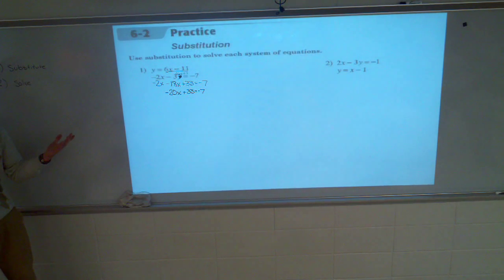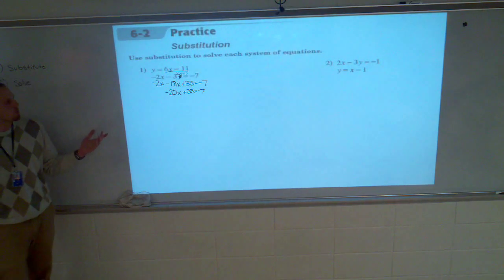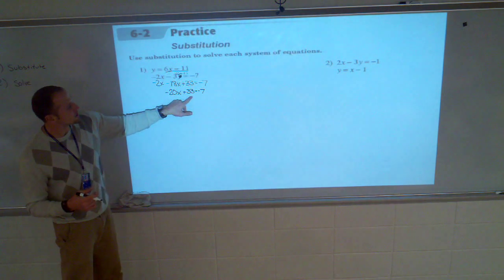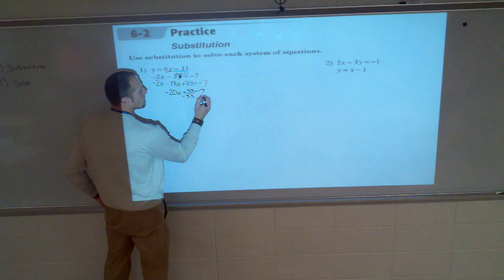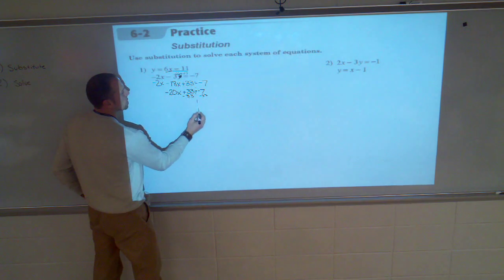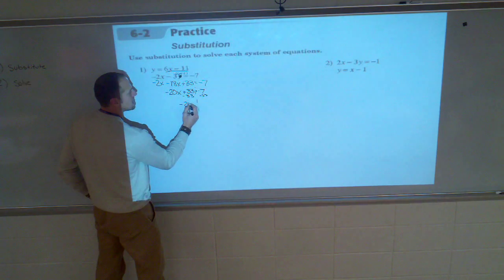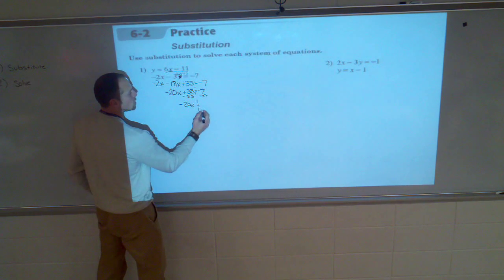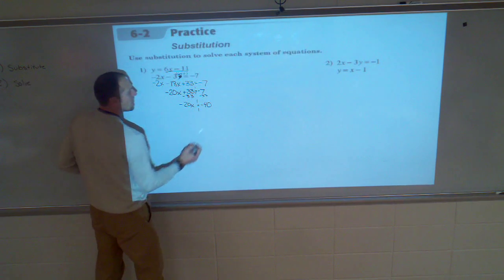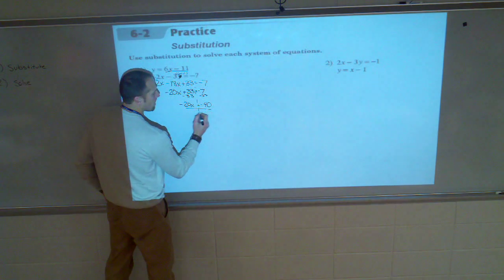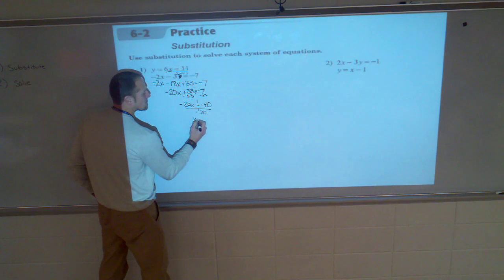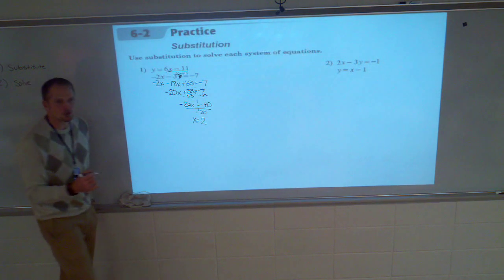Now, we can solve this from here. No problem, Lacey. What's my first step in solving this? Perfect. Subtract 33 from both sides. So, over here, I've got negative 20X is equal to negative 40. And, Erica, how do I get rid of this negative 20? Divide by negative 20. X is equal to positive 2.